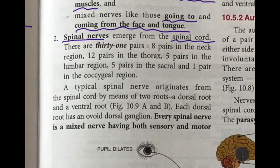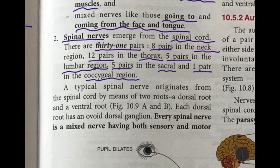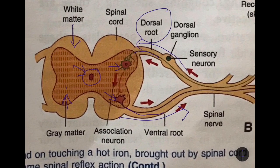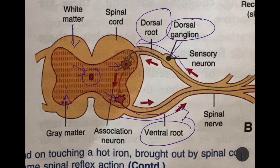Next, the spinal nerves come from the spinal cord. There are 31 pairs: 8 pairs in the neck region, 12 pairs in the thorax, 5 pairs in the lumbar region, 5 pairs in the sacral region, and 1 pair in the coccygeal region — all lying in the backbone. A typical spinal nerve originates from the spinal cord by means of two roots: a dorsal root and a ventral root.